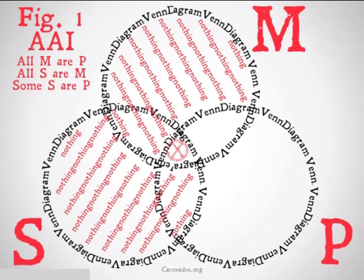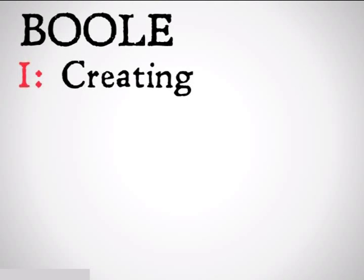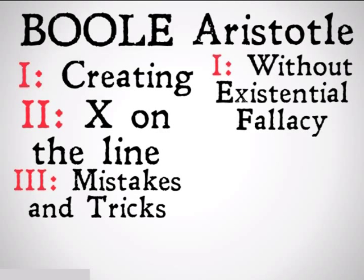Then we're going to see if S exists. S is snake. Snakes exist, so this is going to be a valid argument. That was Aristotle without the existential fallacy — meaning that all of our M's, S's, or P's existed.